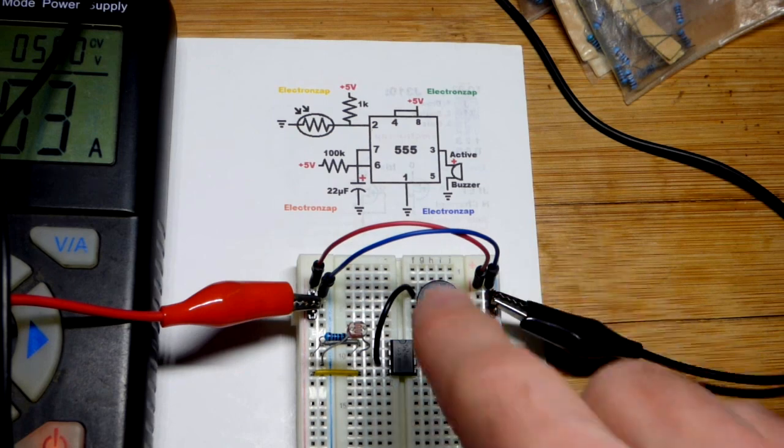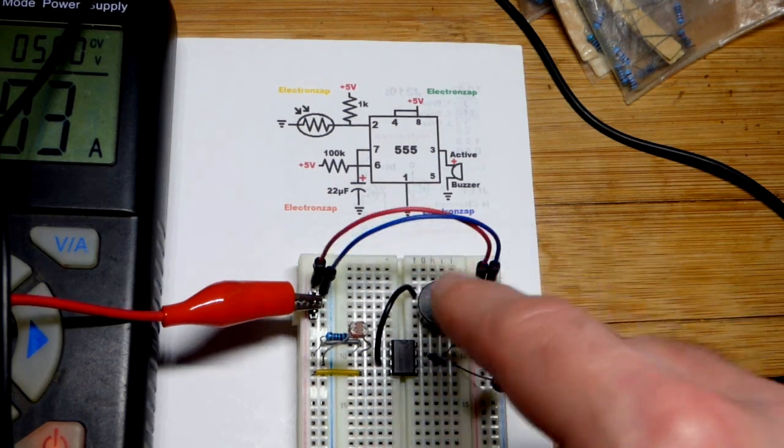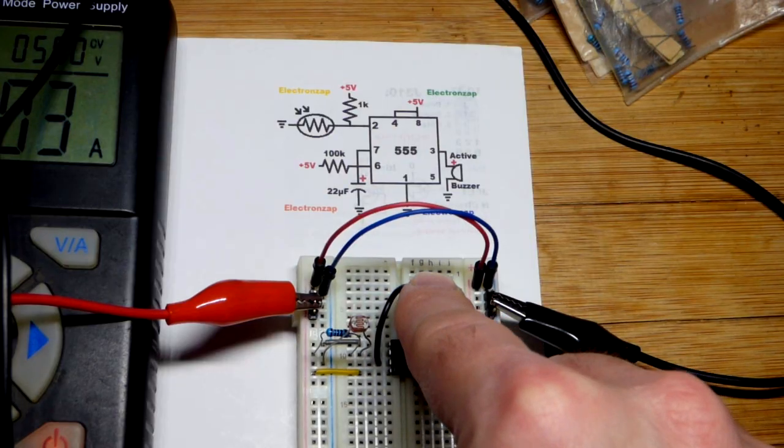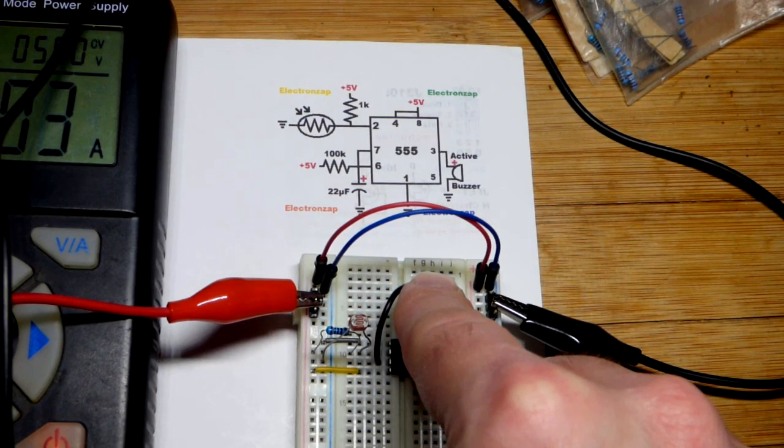So now we're going to take a quick look at another circuit I made a long time ago. This is an active buzzer. You just put a voltage across it, 5 volts, and it buzzes.